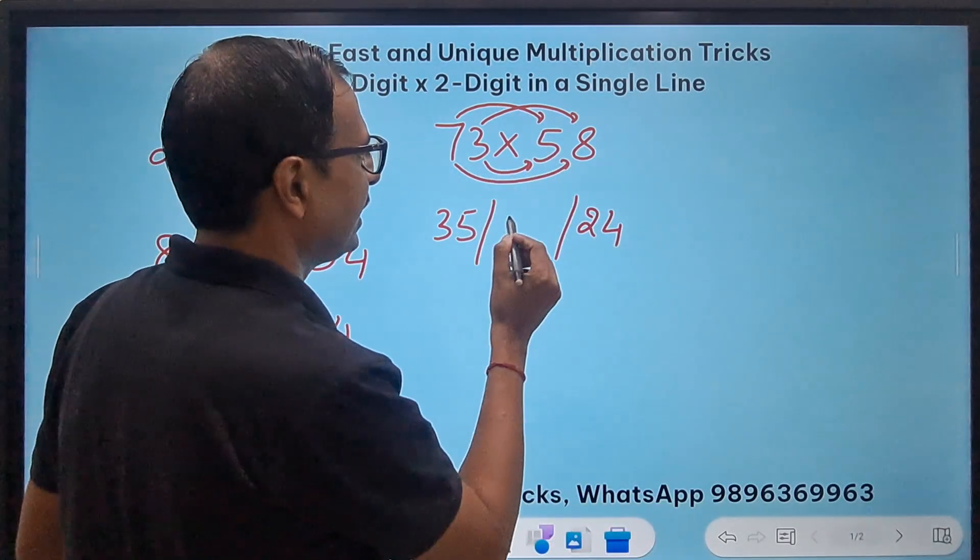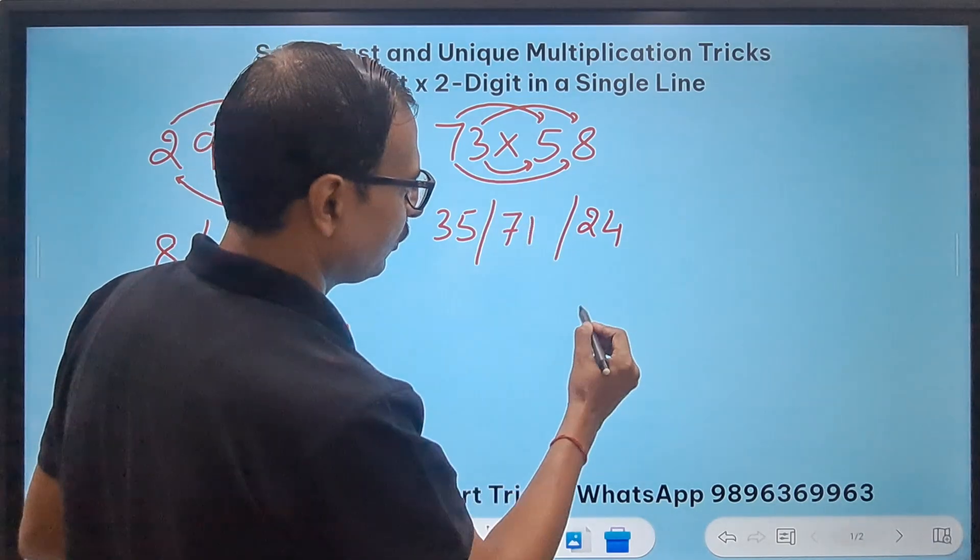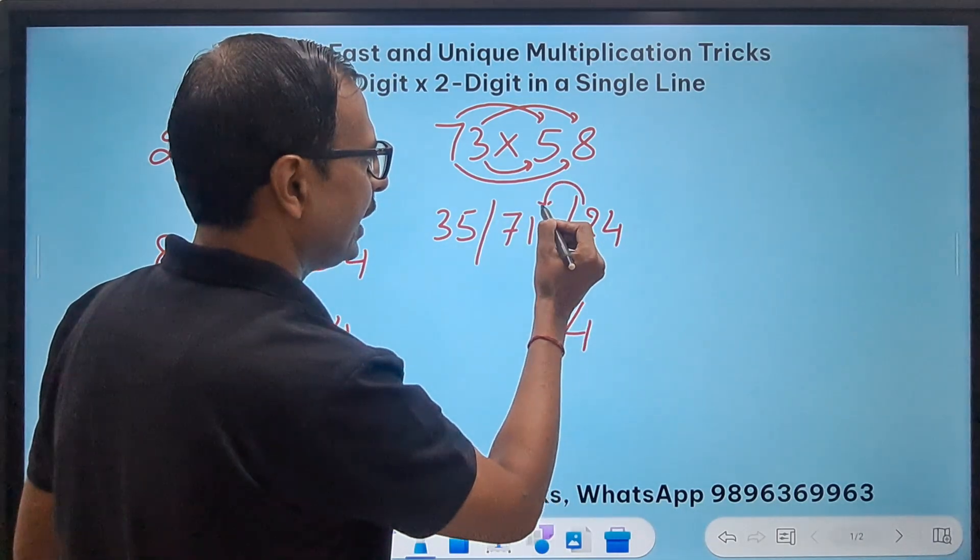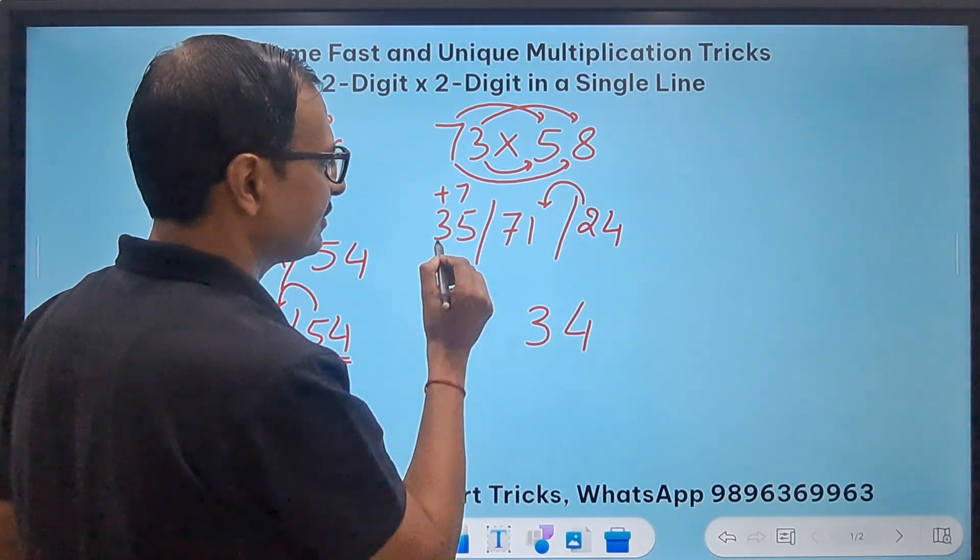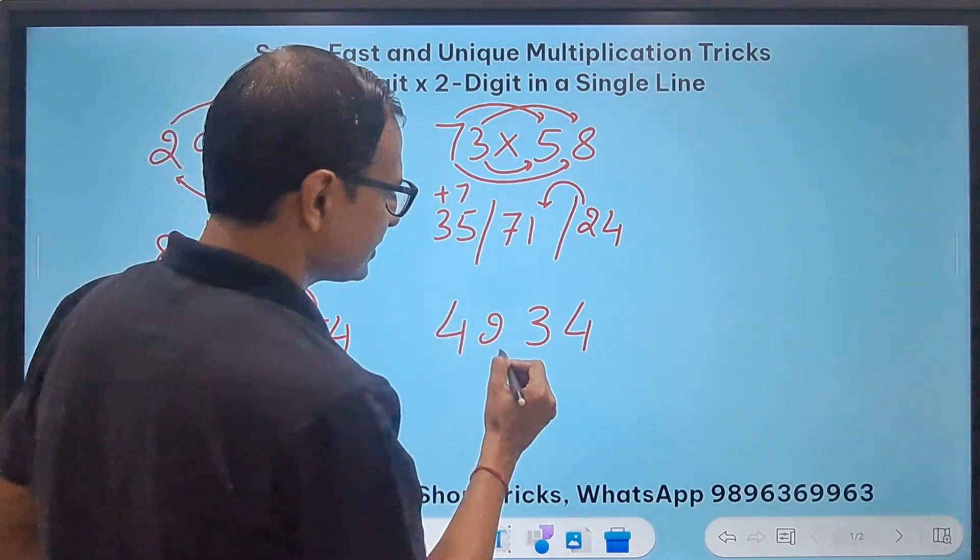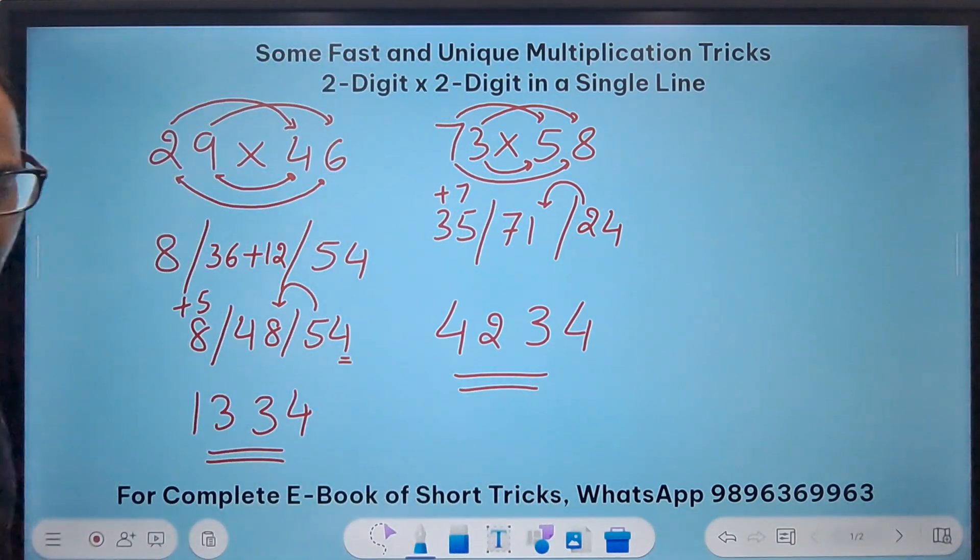Now you should do that in your mind. That is 71 and so 4, 2 added to 71 gives 73 so 3 and a 7 added here gives 42 and therefore your answer is 4234. Now see it is taking less amount of time now and we can even reduce the timing further.